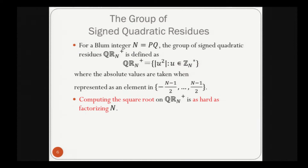We recall the group of signed quadratic residues. For Blum integer N, the group QR_N^+ is defined as the set of all absolute values of quadratic residues modulo N, where the absolute values are taken when elements are represented in a certain range. A key property is that computing the square root on QR_N^+ is as hard as factoring N, which can be proven similarly to the one-wayness of Rabin encryption.